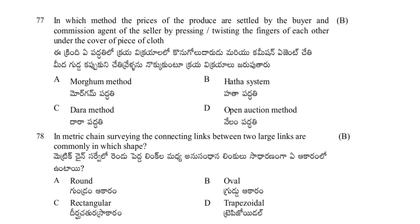In which method are prices of produce settled by the buyer and commission agent by pressing or twisting the fingers of each other under cover of a piece of cloth? Options: Morgan method, hatha system, dara method, open auction method. The answer is hatha method.